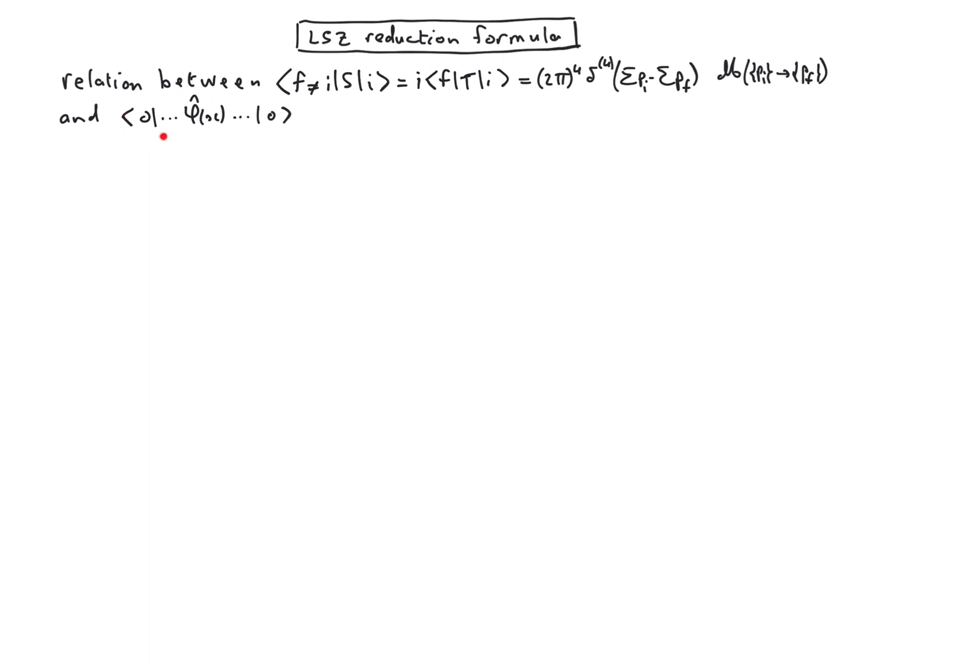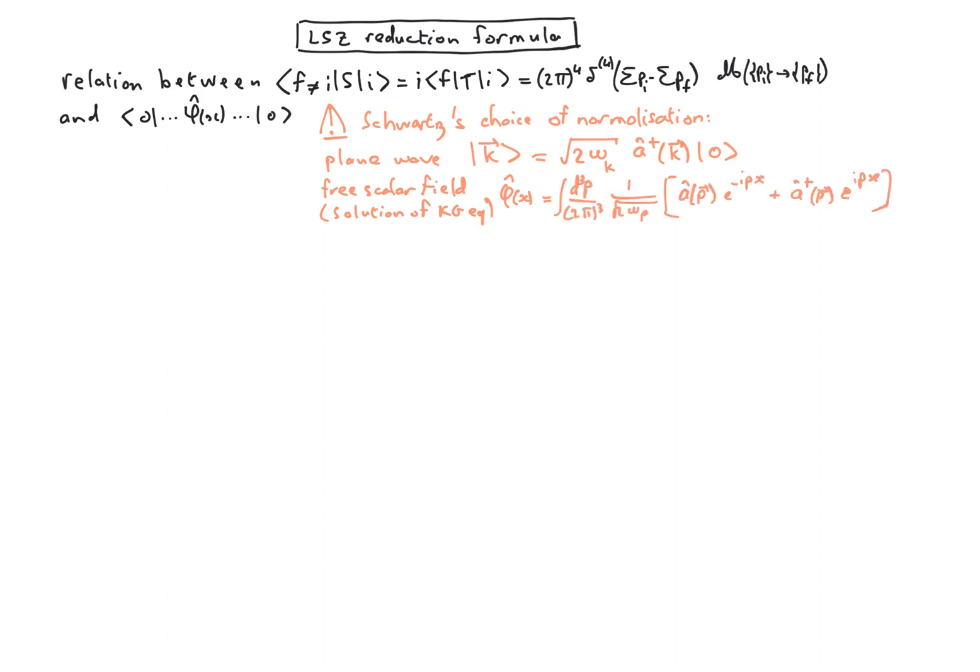From quantities we have access to using the canonical quantization of quantum field theory. To derive the LSZ reduction formula we are going to follow Schwartz's book, which uses different conventions than Zee, and therefore we need to redefine the normalization for the plane wave and also for the free field solution of the Klein-Gordon equation. The difference with what we had before is the square root 2 omega k for the plane wave, and for the free scalar field solution of the Klein-Gordon equation, we have 1 over 2 pi cubed in the denominator, and before we had 1 over square root 2 pi cubed.